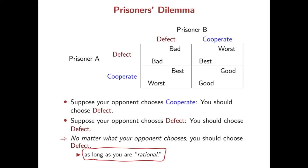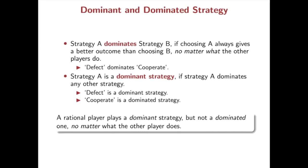In game theory, a player is said to be rational if they make a decision to maximize their own payoff. Now we introduce the concepts of a dominant strategy and a dominated strategy. Strategy A dominates strategy B if choosing A always gives a better outcome than choosing B, no matter what the other players do. So in the Prisoner's Dilemma situation, defect dominates cooperate. Strategy A is a dominant strategy if strategy A dominates any other strategy. So in the Prisoner's Dilemma situation, defect is a dominant strategy, where cooperate is a dominated strategy. A rational player plays a dominant strategy, but not a dominated strategy.